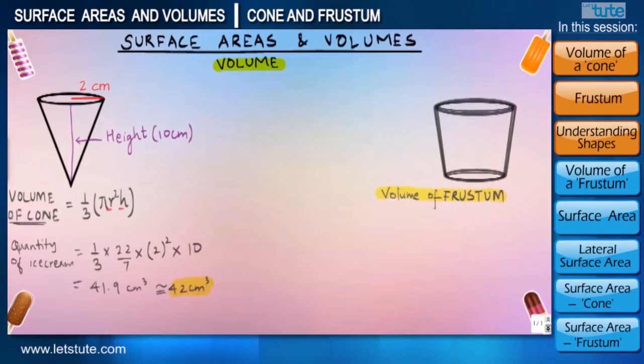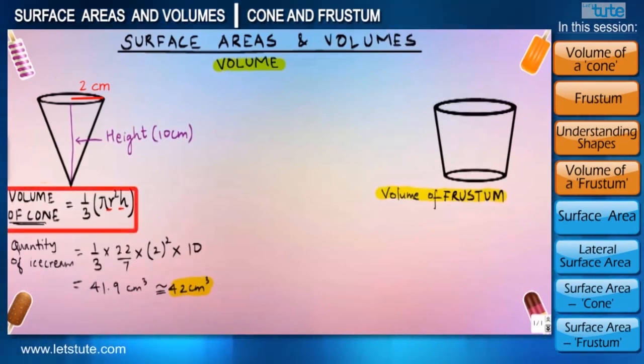Okay, now let's get back to the volume of the frustum. Just remember one thing: the volume of a frustum is also very similar to the volume of a cone we have studied just now—it is 1/3 πr²h.